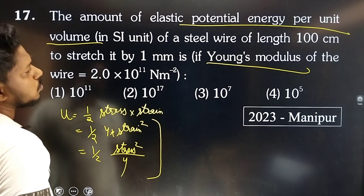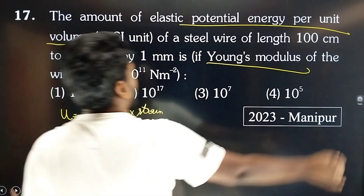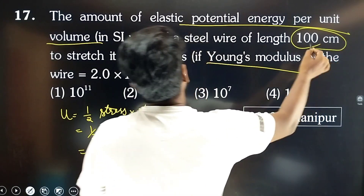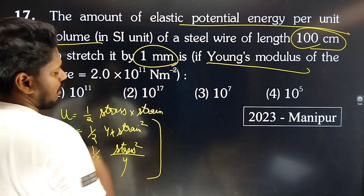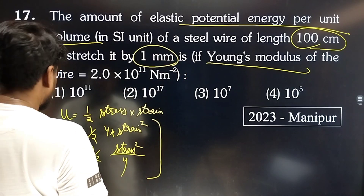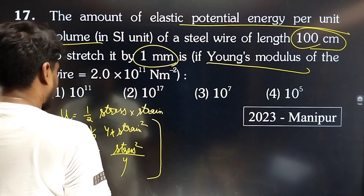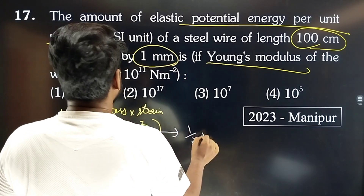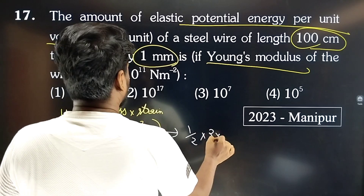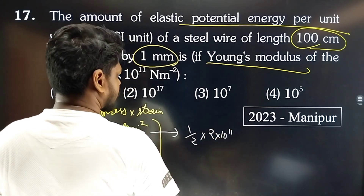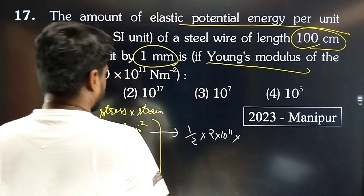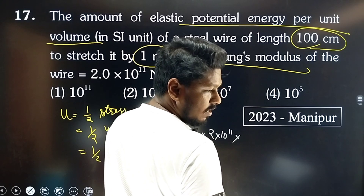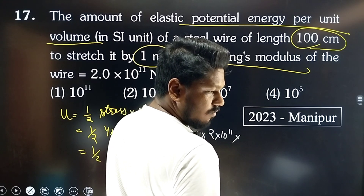The length of the wire is 100 cm and the change in length is 1 mm. From this we can calculate the strain. Young's modulus is given as 2×10¹¹. We substitute the change in length of 1 mm to find the energy density.